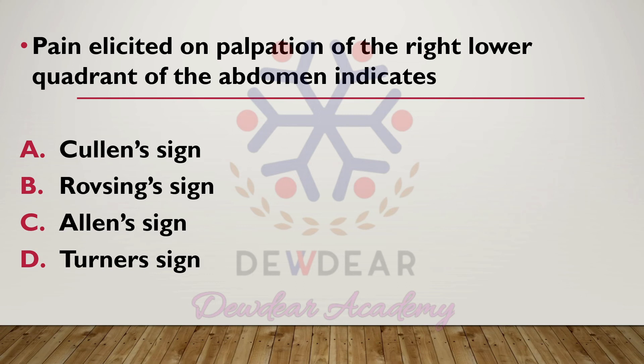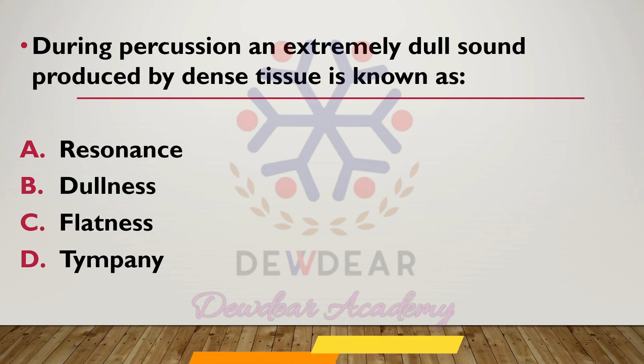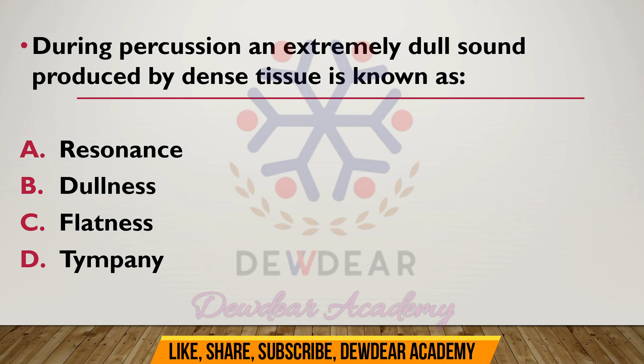Pain elicited on palpation of the right lower quadrant of the abdomen indicates: options Coolant sign, Rovsing's sign, Allen sign, Turner sign. The correct answer is option B — Rovsing's sign.